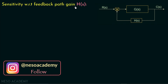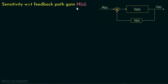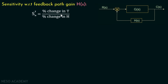We already know that in a closed loop system there are two parameters: one is with respect to the forward path gain G(s), and the other one is with respect to feedback path gain H(s). The sensitivity with respect to forward path gain S_T^G is equal to 1 over (1 + GH). We have derived this expression in the previous lecture, and now we are going to discuss the sensitivity with respect to feedback path gain H(s). The sensitivity S_T^H is defined as percent change in T with respect to percent change in H.